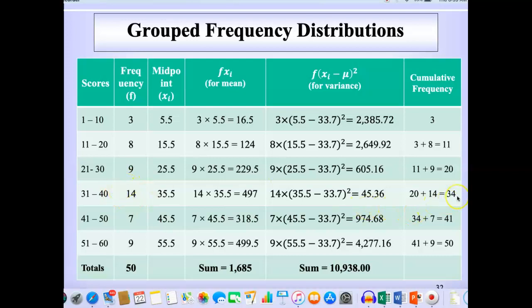That brought us up to 34 persons. So we identified that our median class is the group 31 to 40, that range.